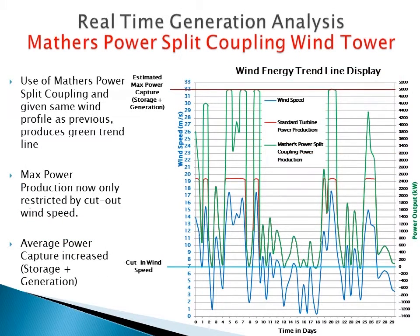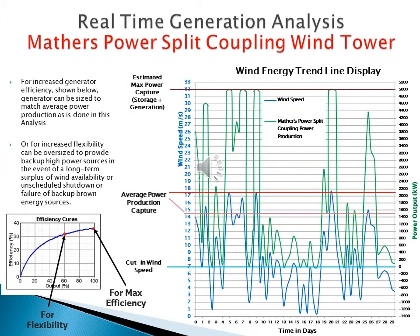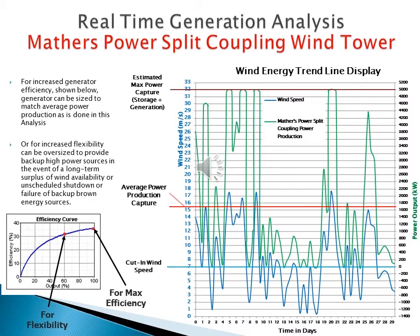Shown here is the same wind generation data with the addition of the predicted power production of a Mathers power split coupling wind tower, calculated from the same wind speed time profile as the conventional turbine data. Note the PSC's maximum power production thanks to the ability to add excess energy to storage. The rated power of the generator is replaced with an average power production, slightly increased as the turbine blades are no longer restricted to a constant rotational speed. Depending on local seasonal wind consistency and size of storage, one could even downsize the generator rating to that of average power production without losing any overall energy production, providing further benefit by having the generator consistently running at its peak efficiency.